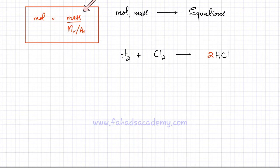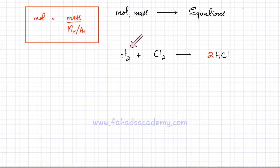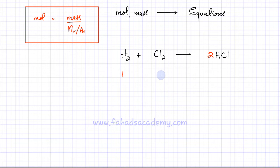Now I'm going to link the formula moles equals mass over Ar or Mr with equations. Previously when we discussed the link between moles and equations, we looked at a balanced chemical equation. A balanced equation tells you the simplest ratio in which the reactants react and products are formed. For example, one molecule of H₂ reacts with one molecule of Cl₂ to produce two molecules of HCl.